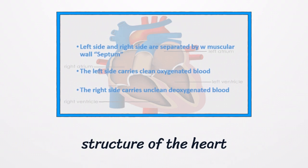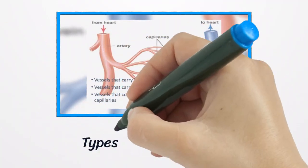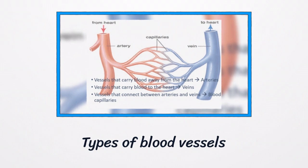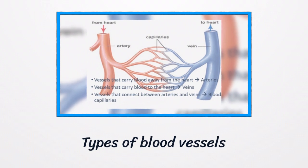The two chambers at the left side carry clean oxygenated blood, while the two chambers at the right side carry deoxygenated blood. We have special tubes for carrying blood through our body and these tubes are called collectively as vessels. There are three types of blood vessels in our body: arteries that carry clean oxygenated blood from the heart to the body parts, veins that carry unclean deoxygenated blood from our body parts to the heart, and blood capillaries that connect between them.